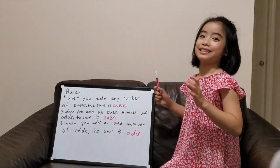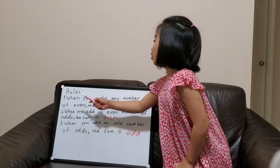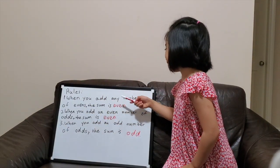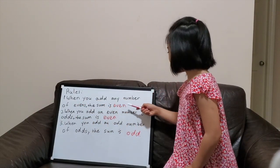Now, let's summarize the rule. Number 1: When you add any number of even, the sum is even.